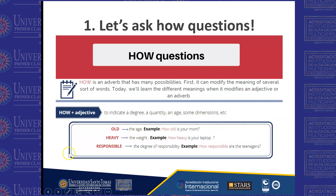Let's see some examples. When we use 'how' plus 'old,' we are talking about age — for example, 'How old is your mom?' When we use 'how' plus 'heavy,' we are talking about weight — for example, 'How heavy is your laptop?' And 'responsible' is another adjective; we are talking about the degree of responsibility of a person — for example, 'How responsible are the teenagers?'